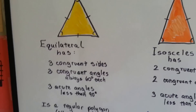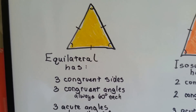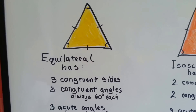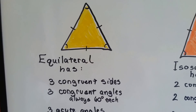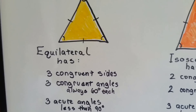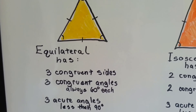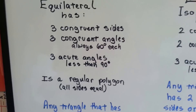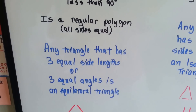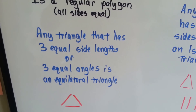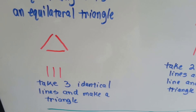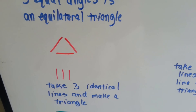An equilateral triangle has three congruent sides — that means three equal sides. Congruent means equal. It has three congruent angles that are always 60 degrees, and they're three acute angles because they're less than 90. It's a regular polygon because all the sides are equal. Any triangle that has three equal side lengths or three equal angles is an equilateral triangle. If you take three identical lines and make a triangle out of it, you're going to have an equilateral triangle.